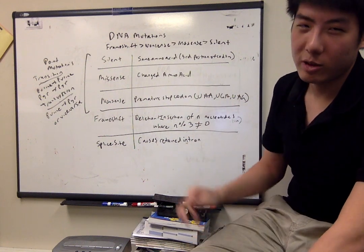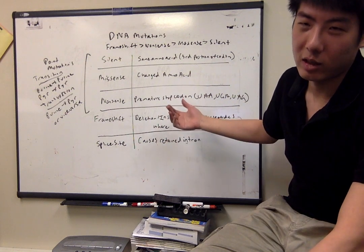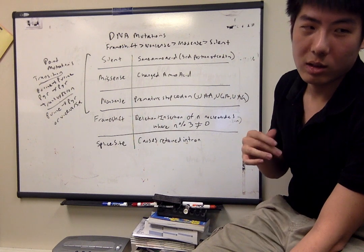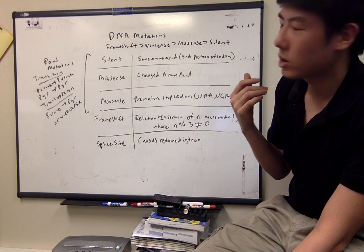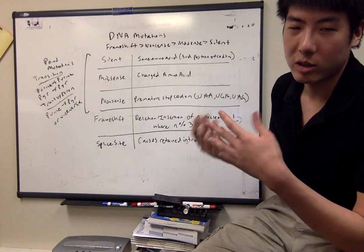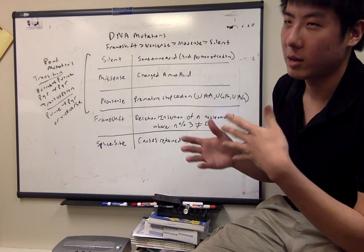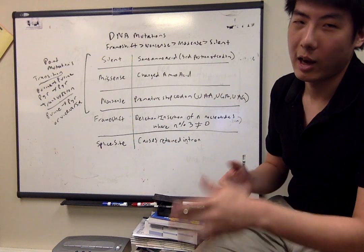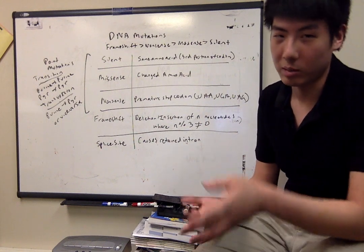A missense mutation is when you have a single change in amino acid, and a nonsense mutation is when you change that codon to create a premature stop codon. That's kind of bad, as you can imagine, because the resulting protein gets truncated and might not have any semblance of function.